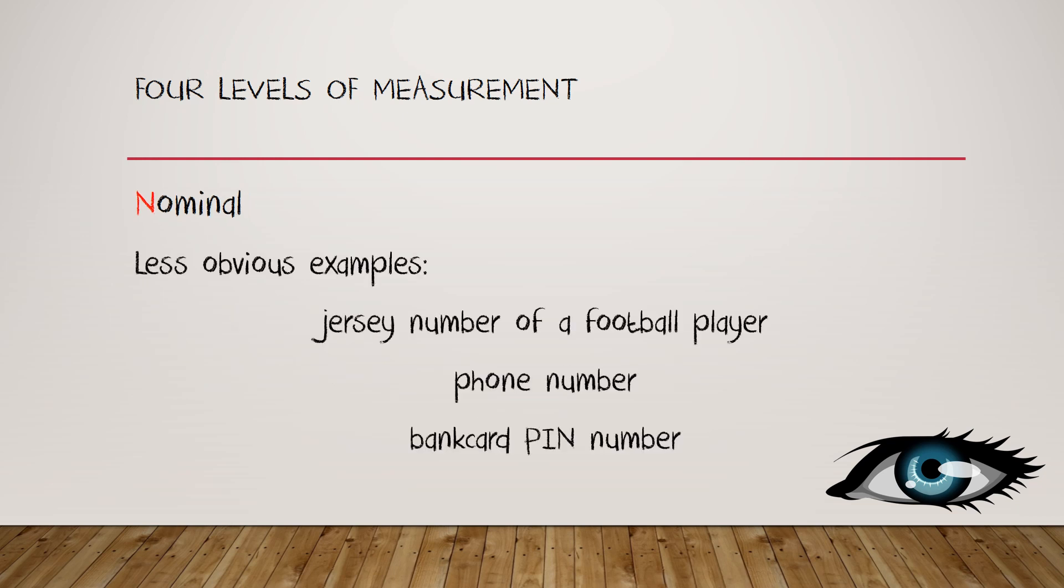Just because a piece of data is numeric doesn't mean it's not nominal. Here are some examples of nominal data that are less obvious. The jersey number on a football player is numeric data, and yet it doesn't convey any numeric information. They're just identifiers. A football player could have double X or a star on their jersey to identify them just as well. It's still nominal data. The same with a phone number. It makes no sense to, for example, add six to a phone number, or to compare two phone numbers to decide which one is bigger. Bank card pin numbers work the same way.